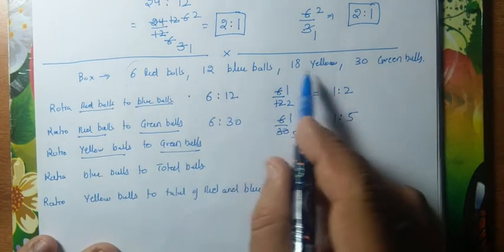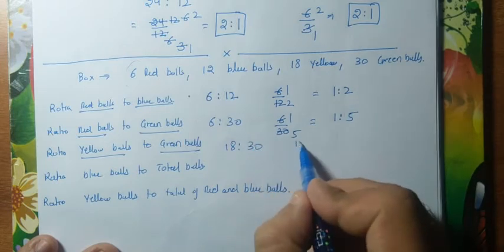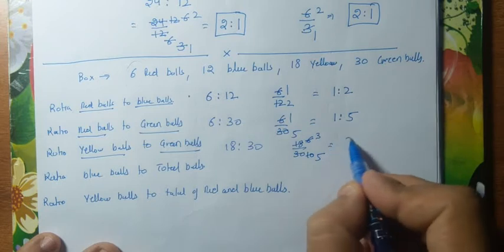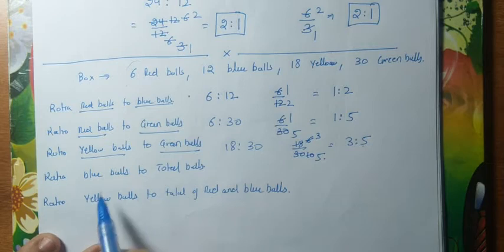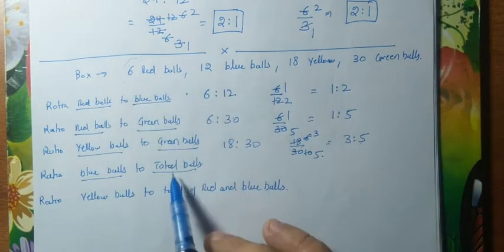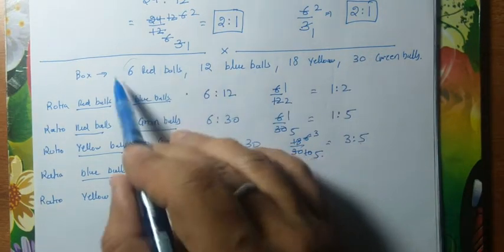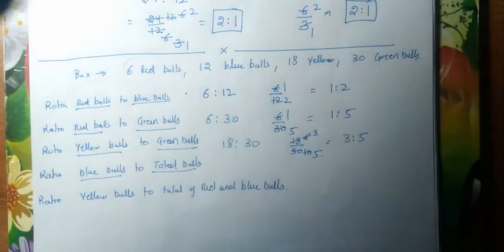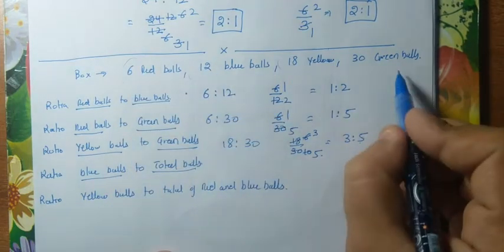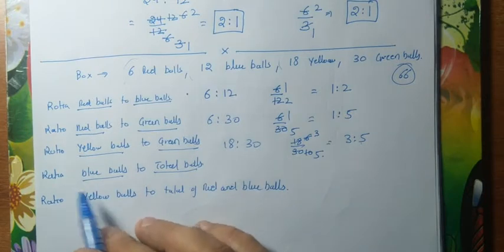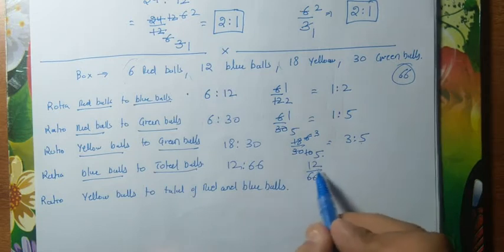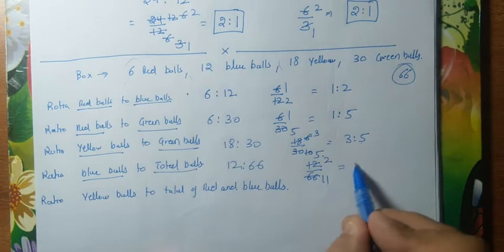Ratio of yellow ball to green ball: yellow is 18, green is 30. So 18 by 30 — divide by 3: 3×6=18, 3×10=30, then further: 2×3=6, 2×5=10, so ratio is 3 : 5. Ratio of blue balls to total balls: blue is 12 but total is unknown. Add all balls: 30 + 18 + 12 + 6 = 66 balls. So 12 by 66 — 6×2=12, 6×11=66 — ratio is 2 : 11.